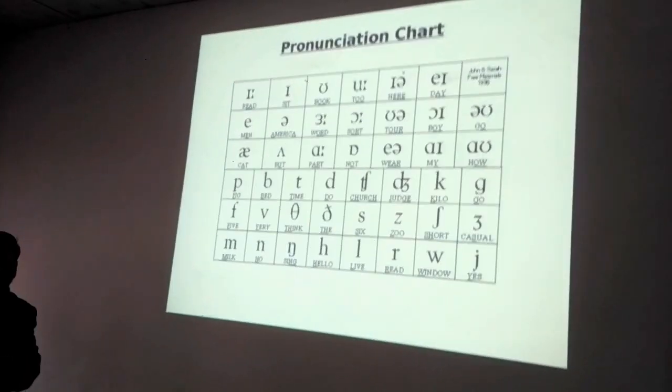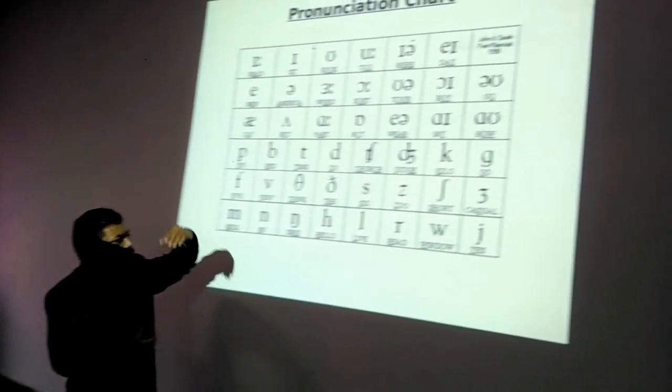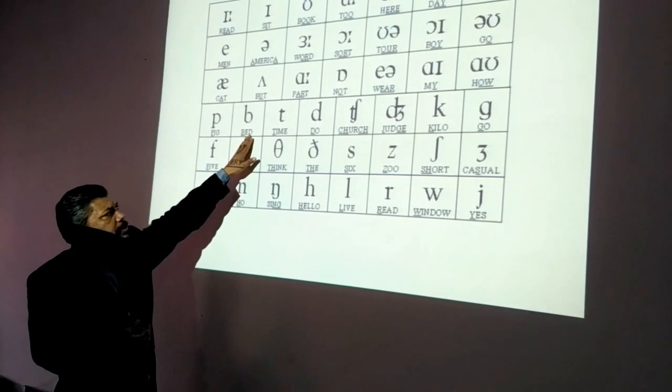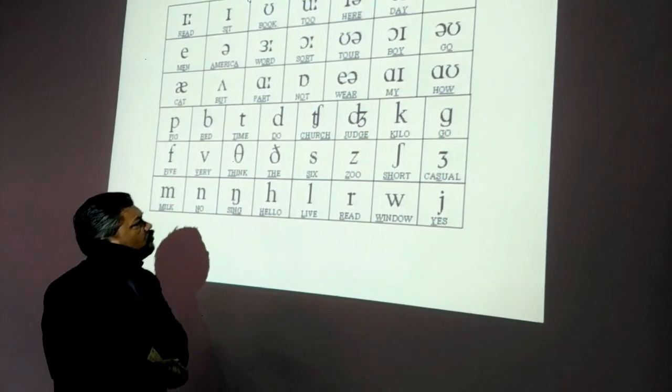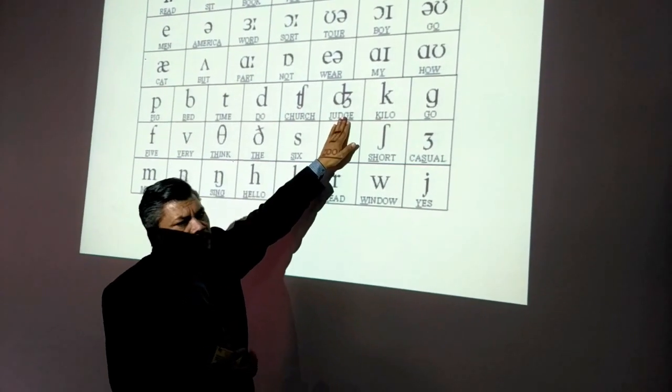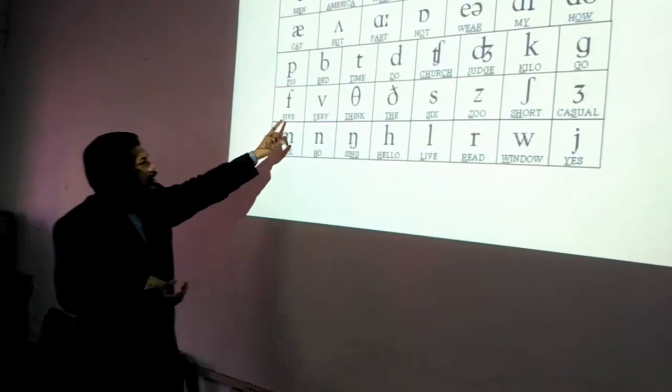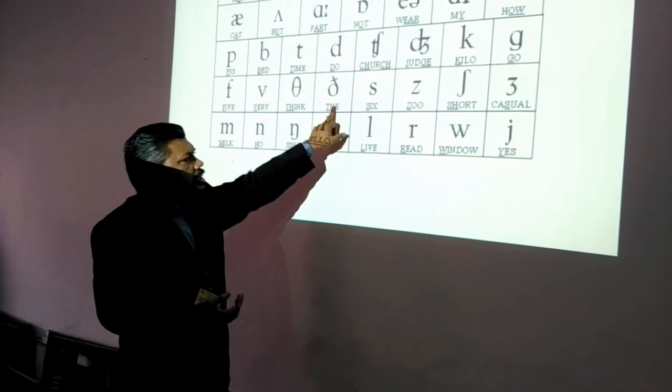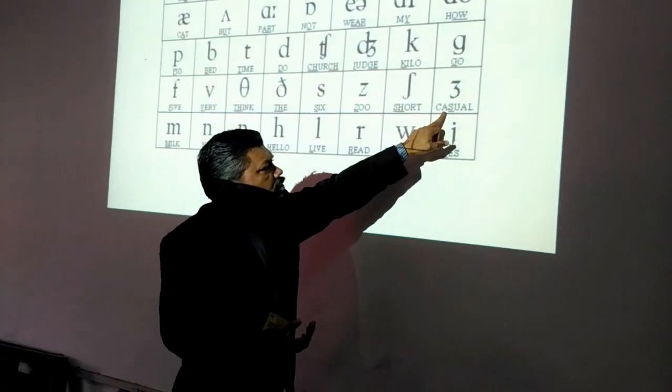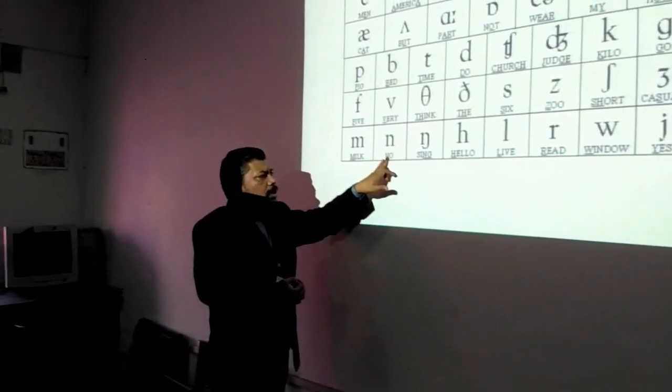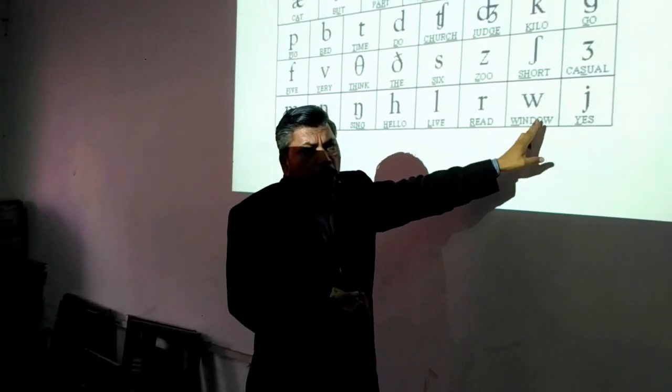Finally, there is a list of consonants. P and B bilabial. Then T and D. And then we notice CH and J. Then we notice K and G. And then F and V. TH and DH. S and Z. SH and ZH. And then there is M, N, NG, H, L, R, W, and Y.